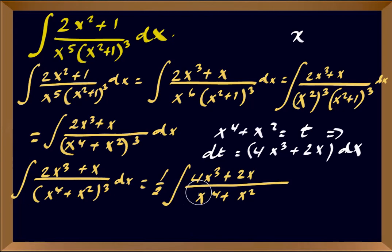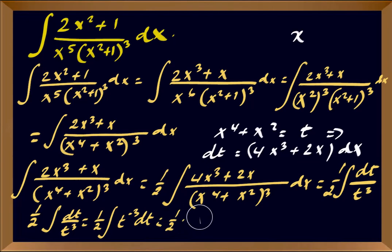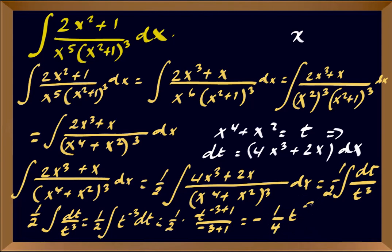Now plugging in t, we get one half of the integral of dt over t³. This equals one half of the integral of t⁻³ dt, which equals one half times t⁻³⁺¹ over (−3 + 1), giving us −1 over 4t².